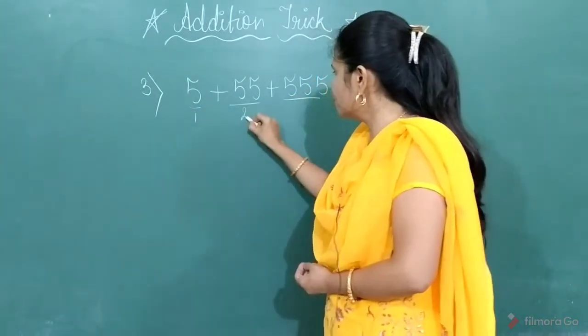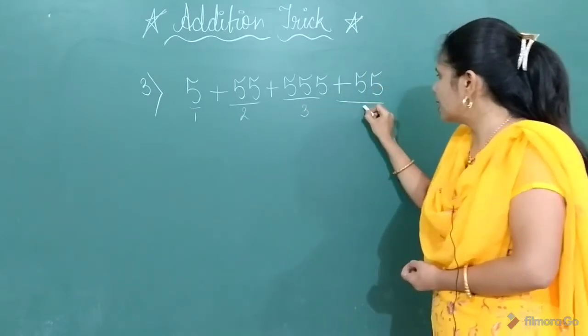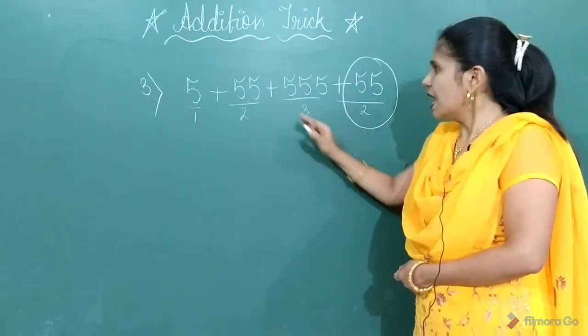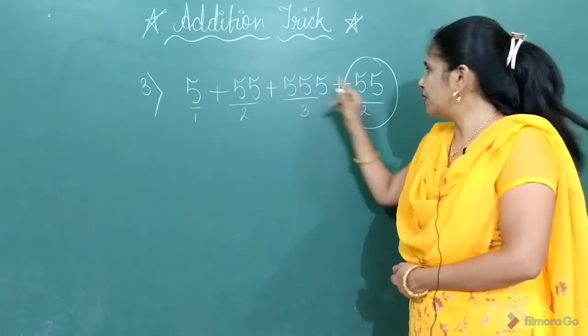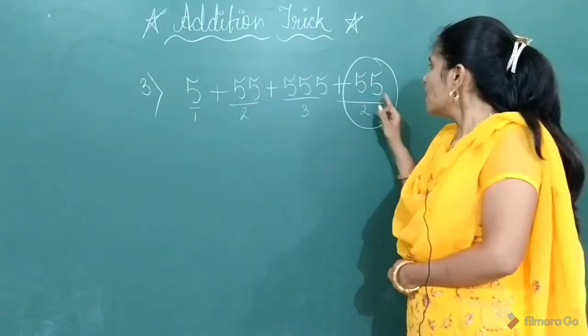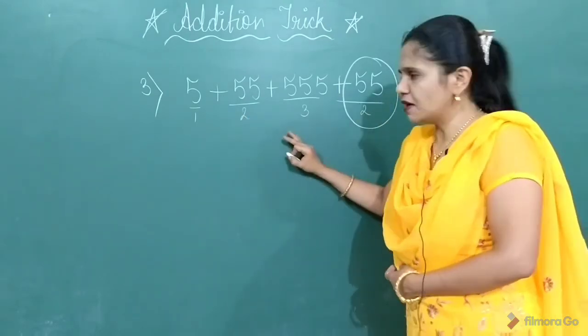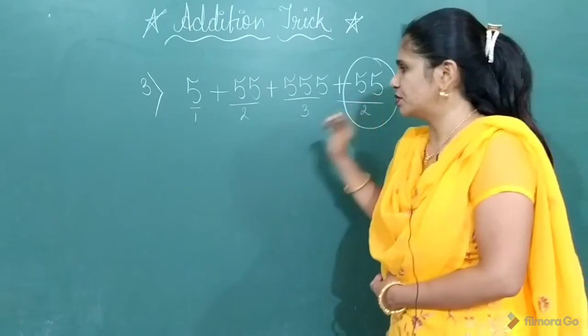So here 1, here 2 times, here 3 times and here again 2 times. Once you will do the numbering, as the number 55 is repeating 2 times, one number you will keep separately. And the remaining numbers, you will arrange in increasing order.